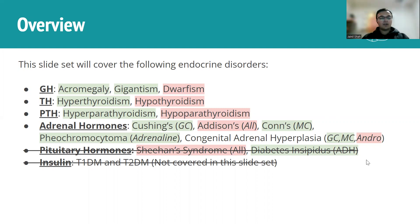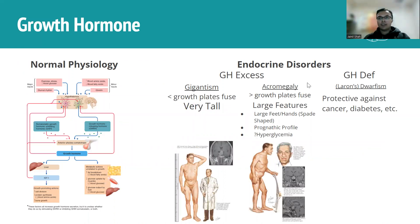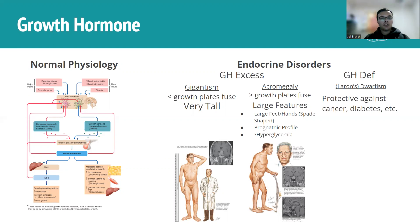Let's start with growth hormone. On the left is the normal physiology, which was covered in a previous video. The key thing is what happens with excess or deficiency. When growth hormone excess occurs prior to growth plate fusion, the bones can still grow long and tall, resulting in gigantism — the person becomes markedly taller, as shown in the diagram.